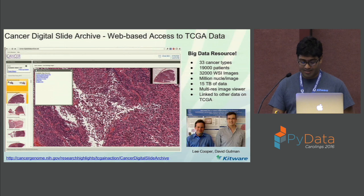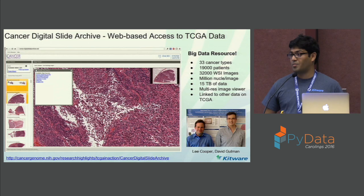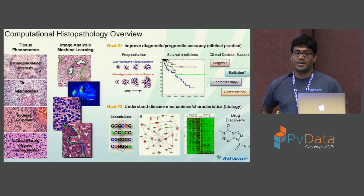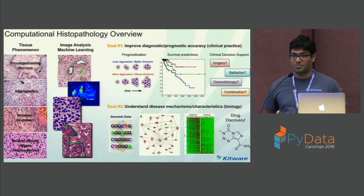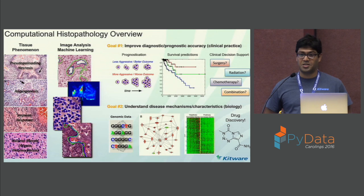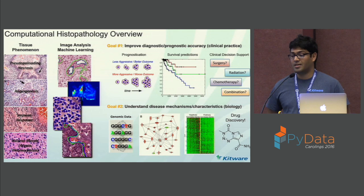Considering the scale of these images, it takes a lot of time for histopathologists to go through an image and arrive at a diagnosis or prognosis. So there has been interest in developing computational techniques to inject some objectivity into this process. Each disease has a unique manifestation on the tissue characteristics. Computational histopathology involves developing image analysis and machine learning algorithms to quantify these tissue phenomena with quantitative features. One goal is to take these imaging biomarkers and correlate them with clinical survival data to build survival models — telling how aggressive the disease is or how long the patient will survive.